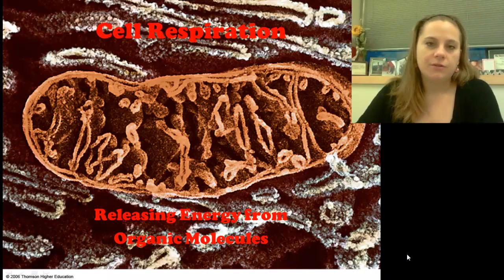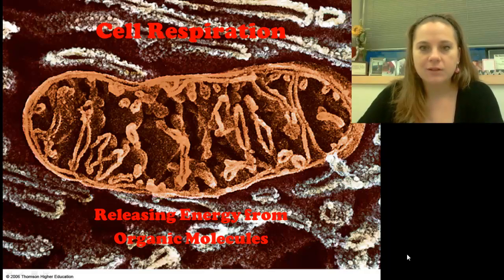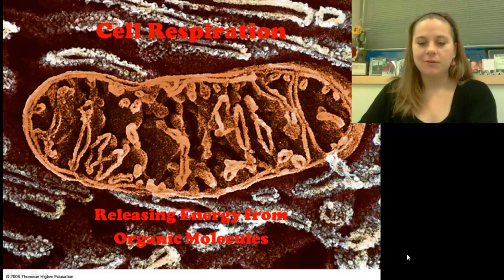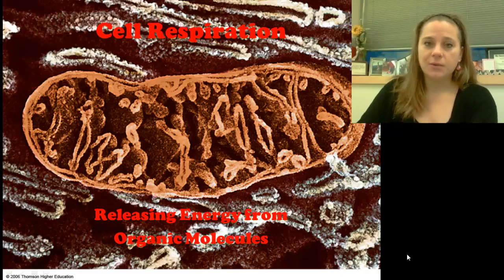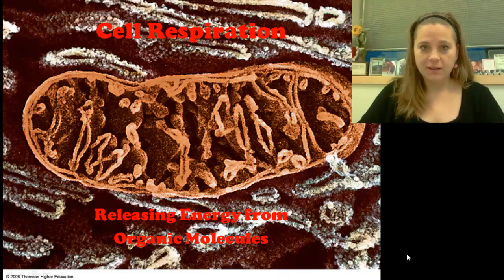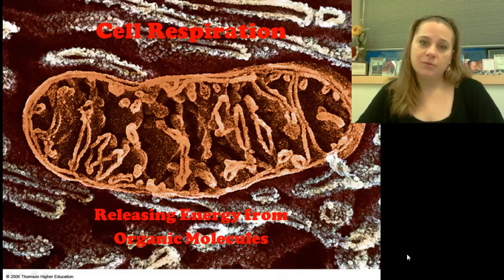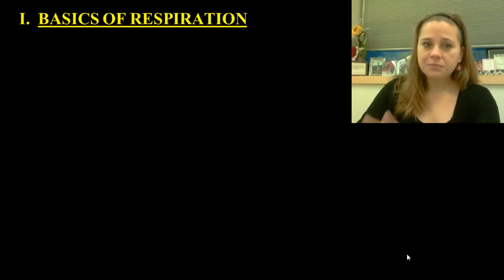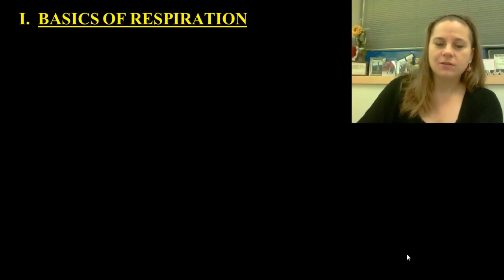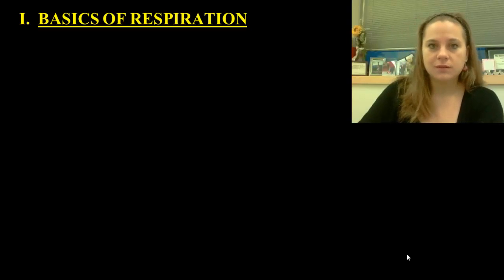Welcome to the third section of our unit on energetics. Here we're going to focus on the process of cell respiration. We just got through talking about photosynthesis; now we get into cell respiration, which is where we take what we made from photosynthesis, take that stored energy, and go through the process of releasing it so that it is a usable form of energy for cells. Let's do a little bit of the basics first.